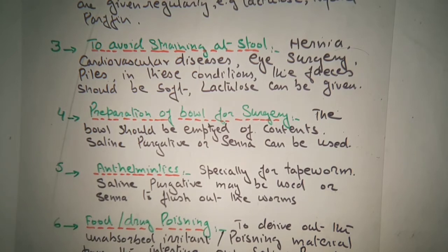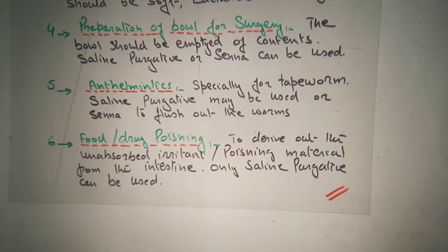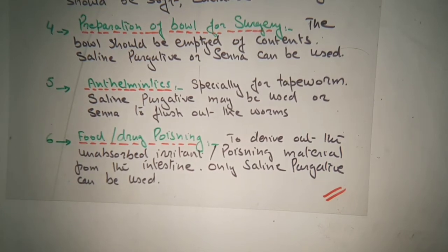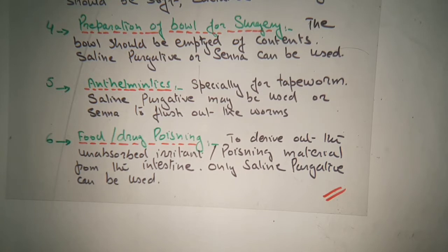Food-drug poisoning — you know about food-drug poisoning, where there is incompatibility of the drugs and they may cause a poisoning condition. To remove unabsorbed poisoning material from the intestine, only senna compound can be used. That covers senna compound, anthelmintics, and laxatives — all of which we have discussed in detail.